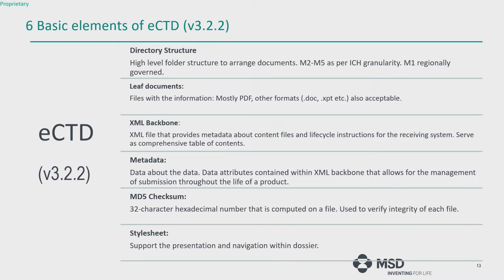To understand the basic elements of eCTD, it is broken down into six structures. Number one is the directory structure: a high-level folder structure categorizing all documents according to ICH CTD granularity — module 3 quality documents including drug substance, drug product, references, and appendices; non-clinical studies in module 4; clinical studies in module 5; and summaries in module 2.